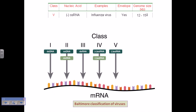The example for Class 5 is influenza virus — very common and probably one of the most well-known viruses. Influenza is an enveloped virus with a genome size of 12 to 15 KB. Remember: Class 5 is influenza — that's the trademark association to print in your mind.